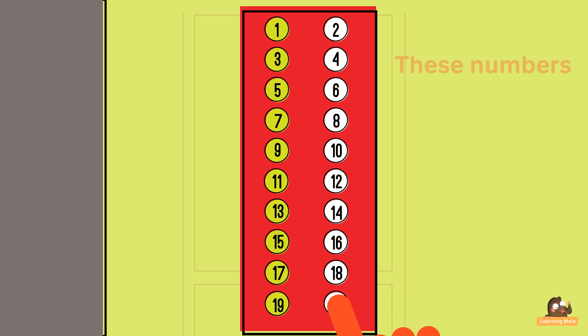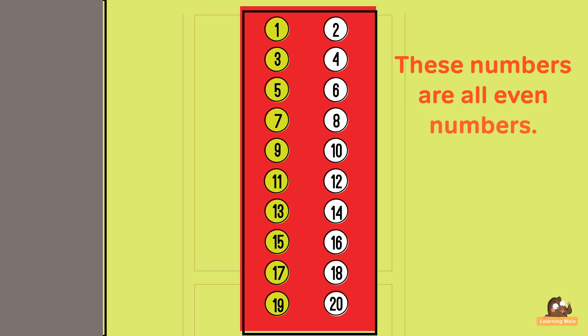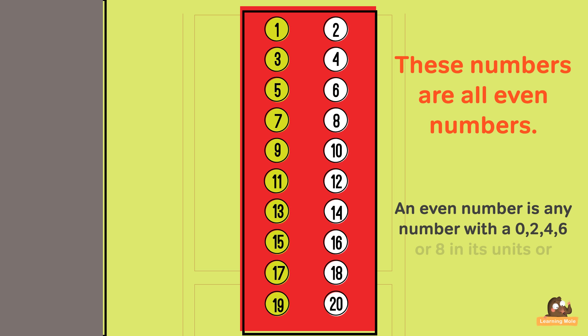These numbers are all even numbers. An even number is any number with a 0, 2, 4, 6, or 8 in its units or ones column.